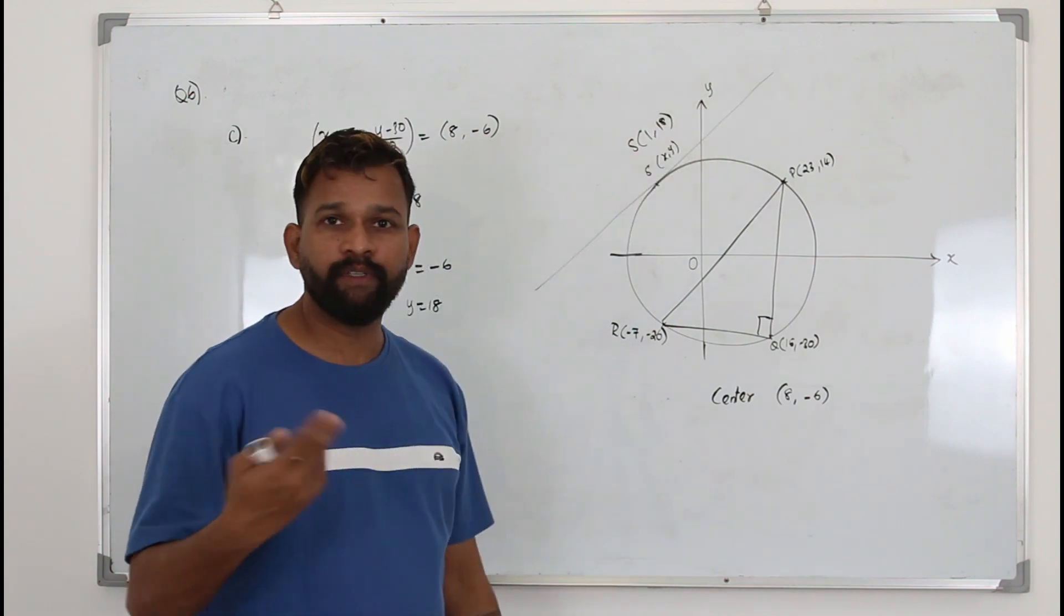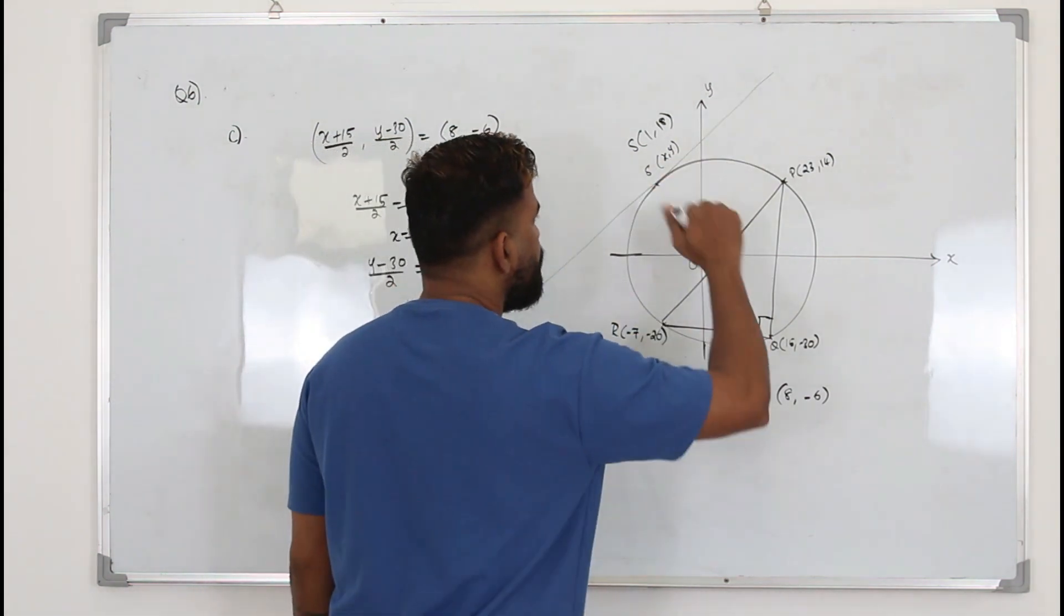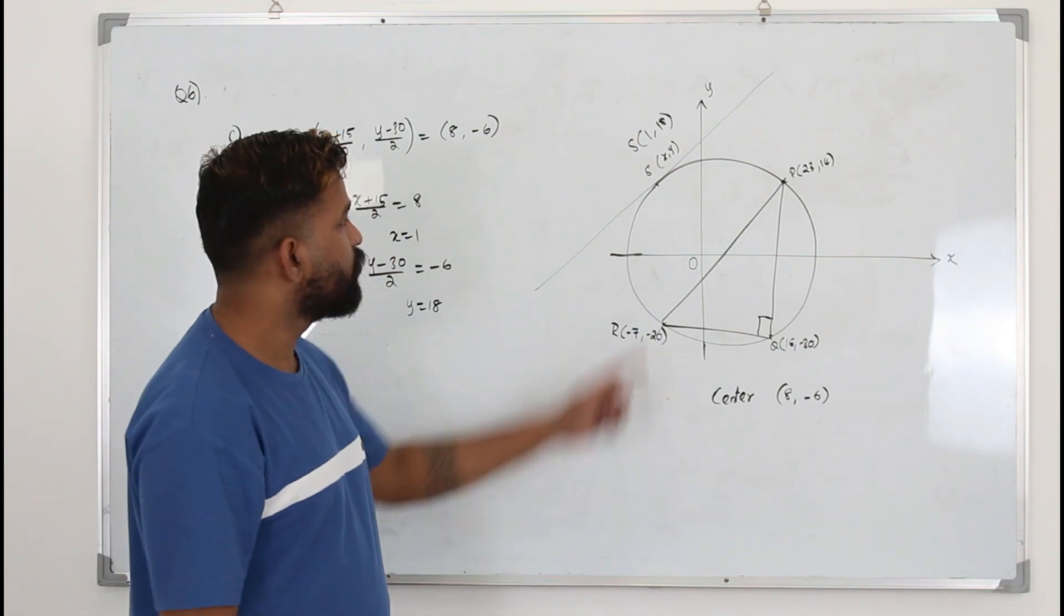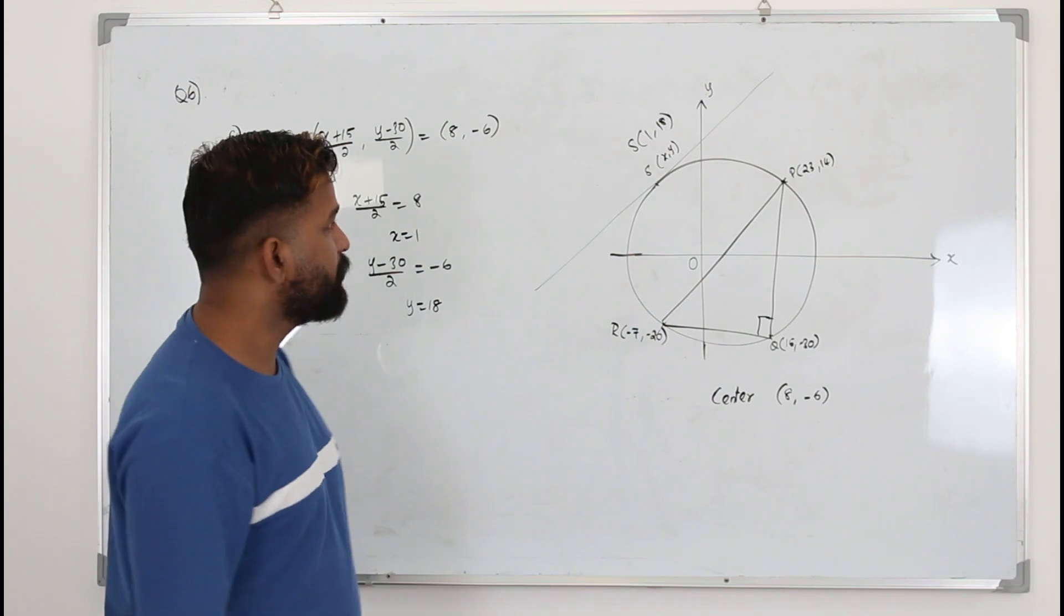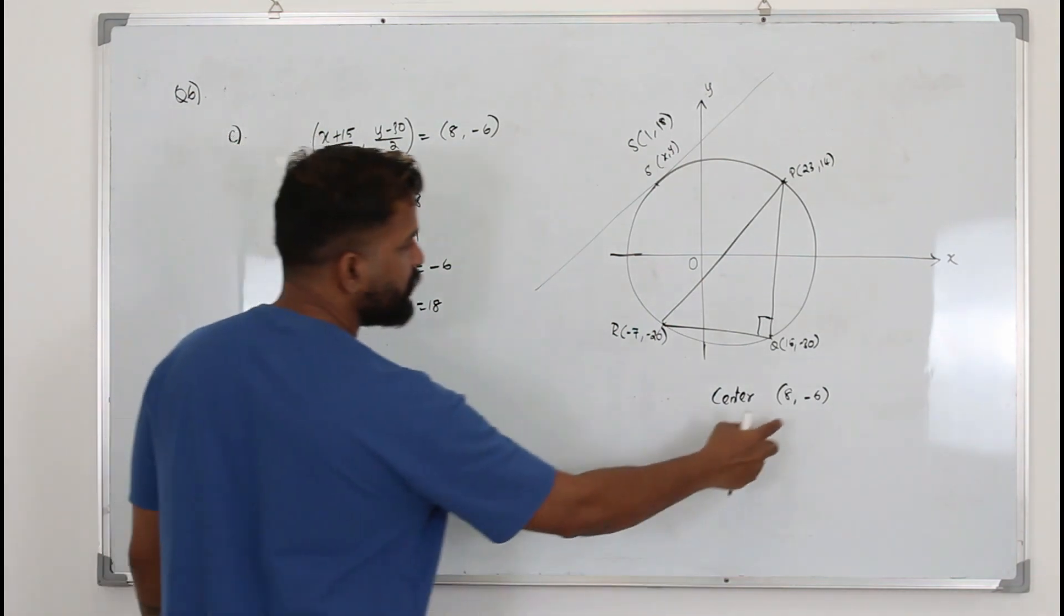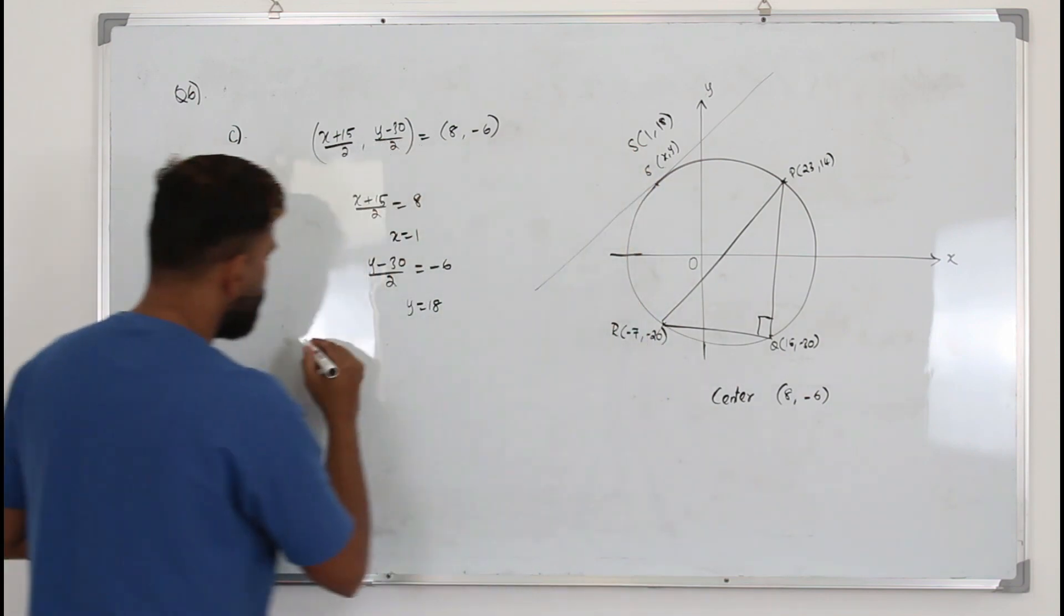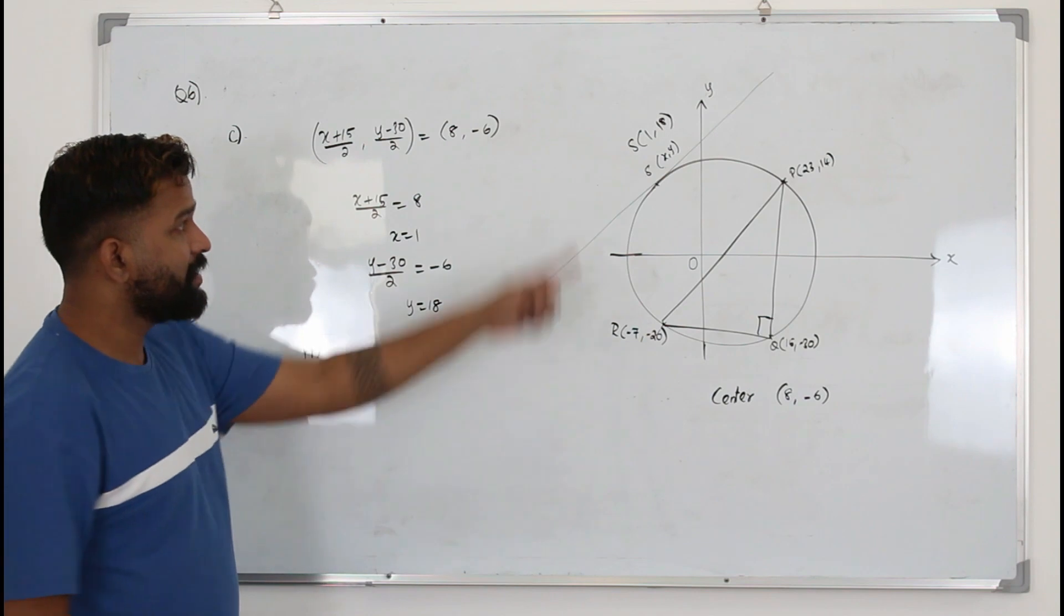Again, we are going to use the circle theorem. The tangent and the radius will be perpendicular to each other. So we find the slope of radius. And use the negative reciprocal. So the radius means center is 8 comma negative 6 and this point. So find the slope of CS, the center and the point S.